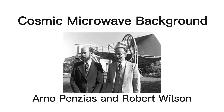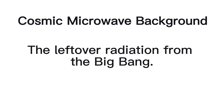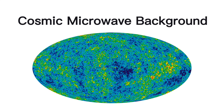Another piece of evidence supporting the Big Bang is the cosmic background radiation, accidentally detected by Arno Penzias and Robert Wilson in 1965. The cosmic microwave background, or CMB, is leftover radiation from the Big Bang — the time when the universe began. The light from the early universe has been traveling through the universe, and we can detect its afterglow, the CMB, on Earth.